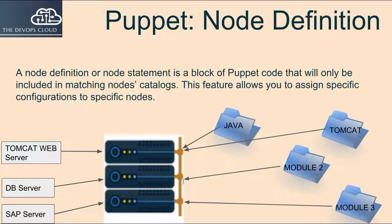A node definition or node statement is a block of Puppet code that will only be included in matching nodes' catalogs. This feature allows you to assign specific configurations to specific nodes. Node definitions look like class definitions.